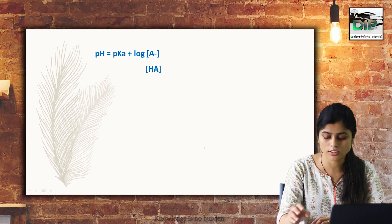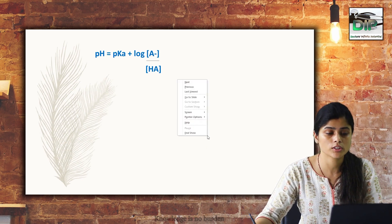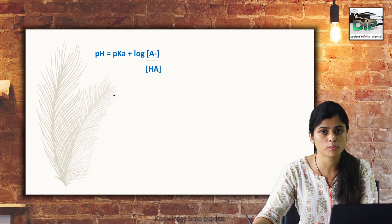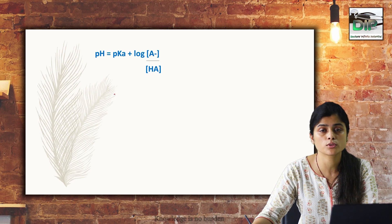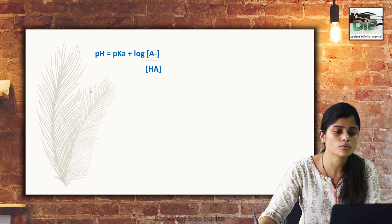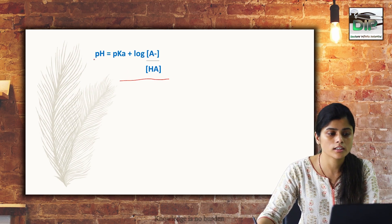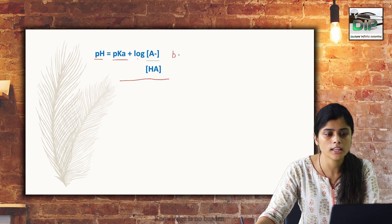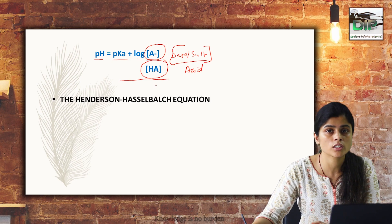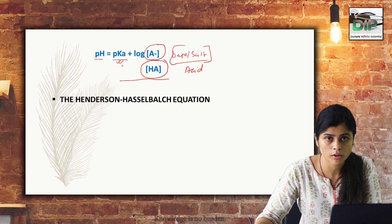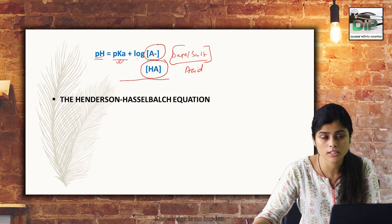Now, what is the Henderson-Hasselbalch equation and why should we know it? Having covered pH, pKa, and strong versus weak acids, these formulas mainly apply to weak acids which dissociate partially or are half ionized. The Henderson-Hasselbalch equation is: pH = pKa + log [base/acid], also expressed as salt divided by acid concentration. The base concentration is in the numerator and the acid concentration is in the denominator. This equation is used to calculate pKa, pH, or any missing concentration when the other values are given.